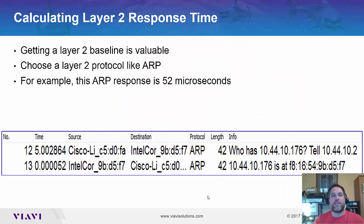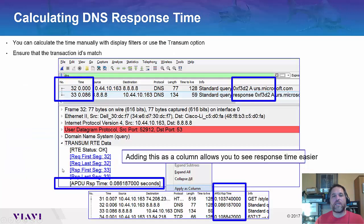We talked about the layer 2 response time — ARP. You have an ARP command, ARP response, and there's your time: 52 microseconds, that sort of thing. And then DNS response time and all that good stuff.